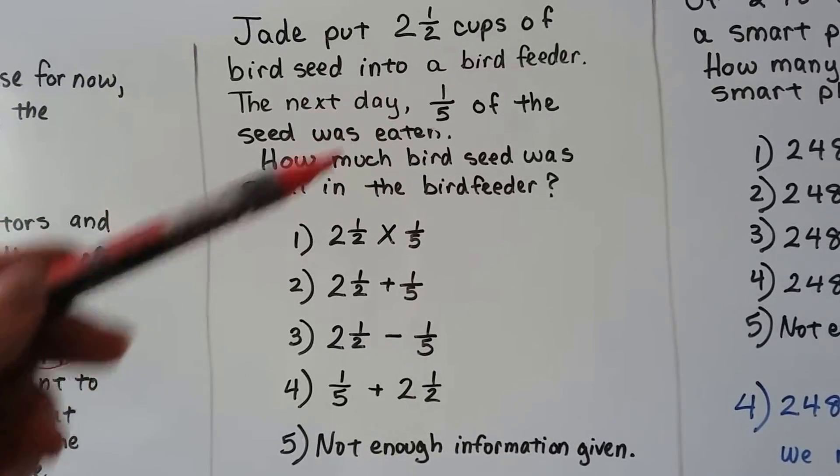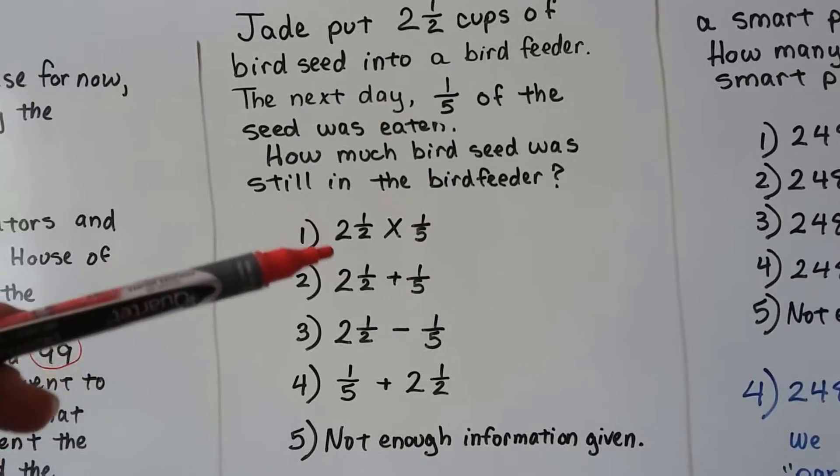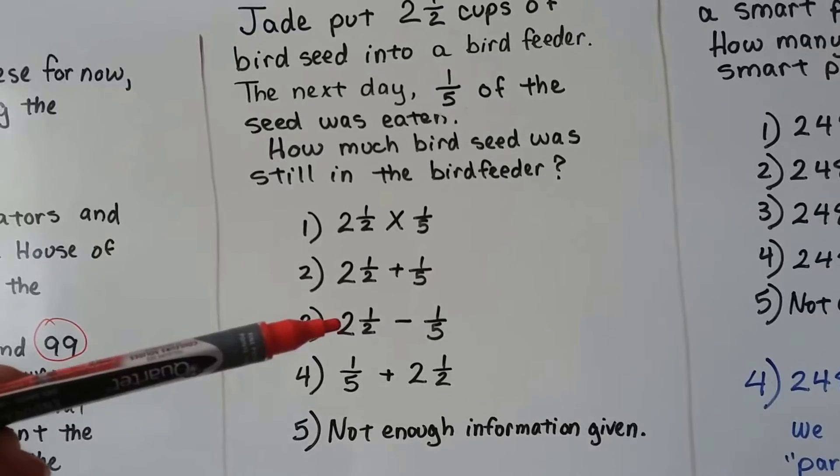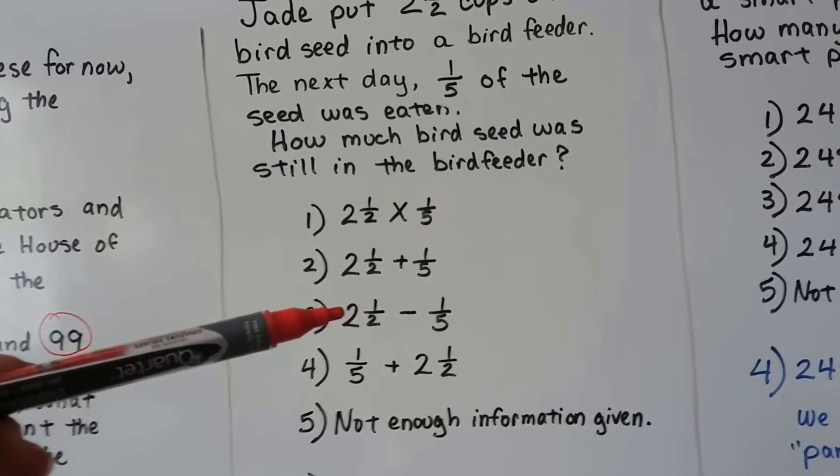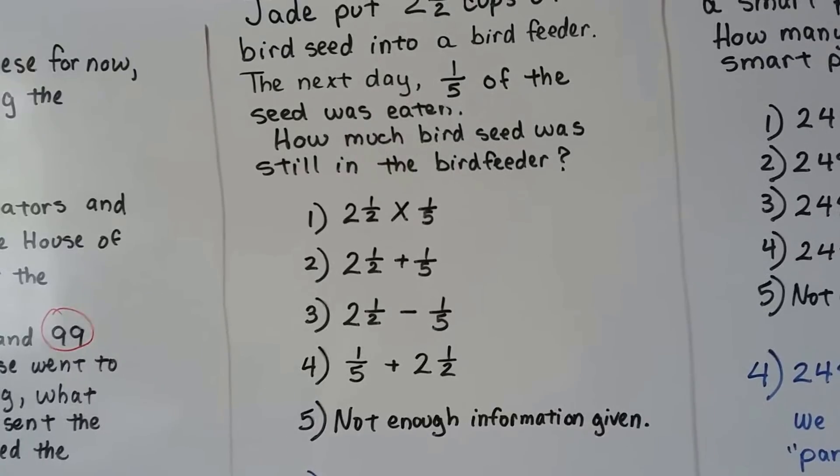Well, that means one fifth was gone, right? Would we multiply the two numbers together? Would we add them? Would we subtract two and a half minus one fifth? Or would we do one fifth plus two and a half? Or is there not enough information?